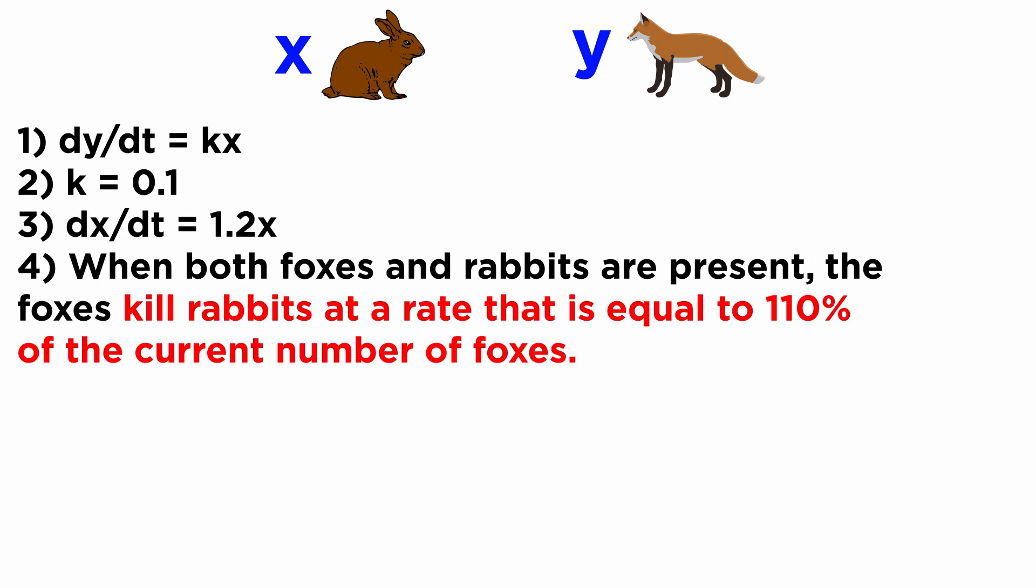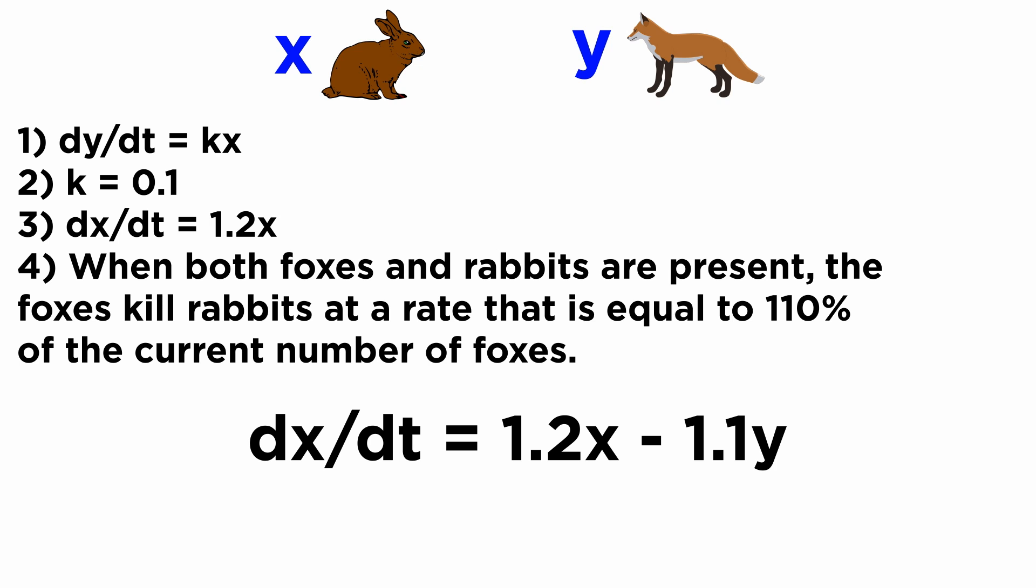Then, when we bring foxes back into the equation, we find that there is a death rate of rabbits due to predation equal to 1.1 times y, so we can subtract the term 1.1 times y from our last equation.